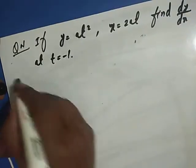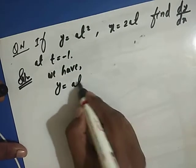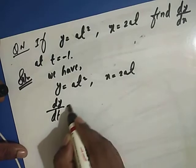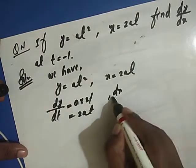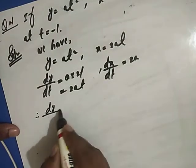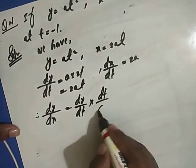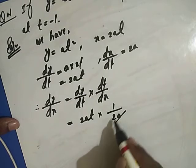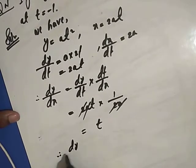Solution: We have y equals at squared and x equals 2at. Differentiate y with respect to t: dy/dt equals 2at. And dx/dt equals 2a. Therefore, dy/dx equals dy/dt times dt/dx, which is 2at times 1/(2a). This simplifies to t.